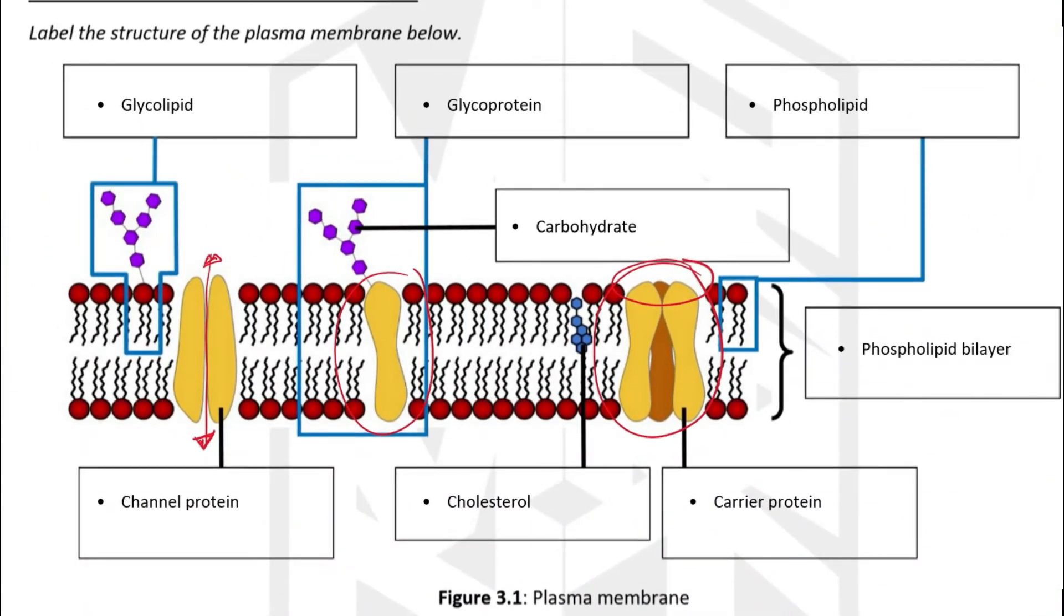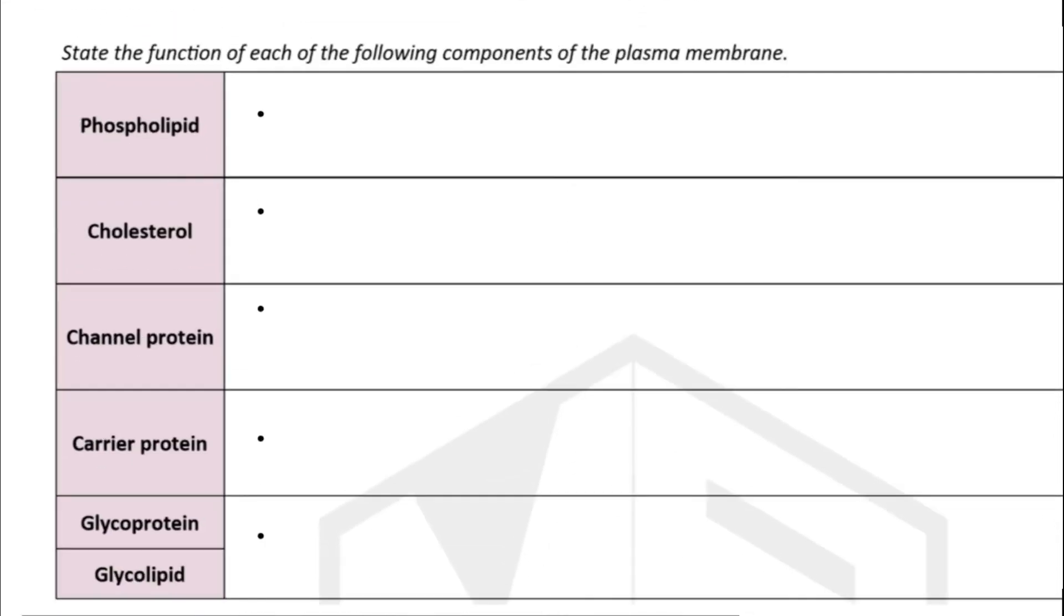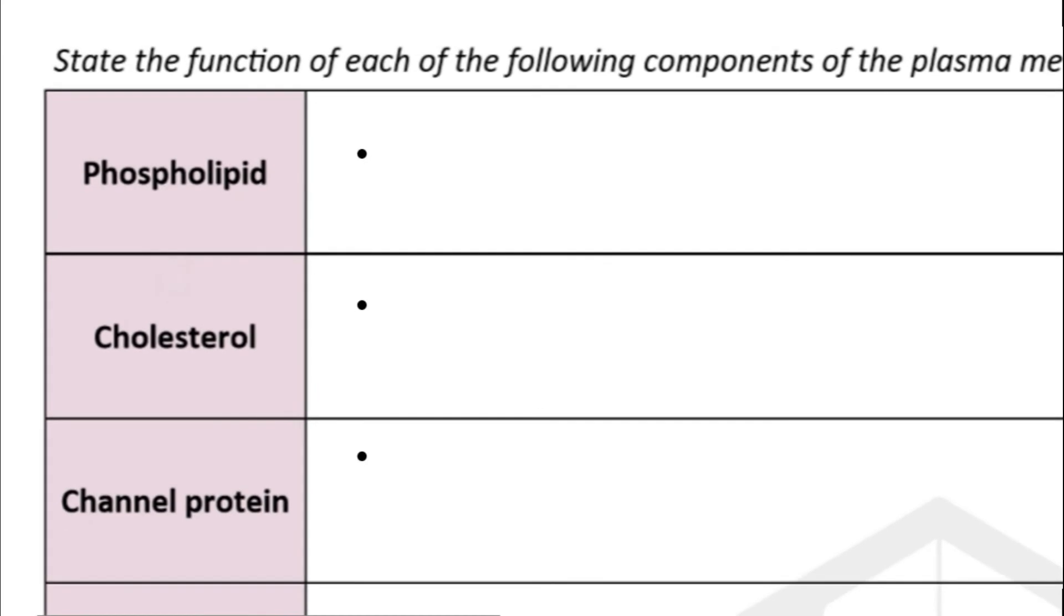Now let's go on to discuss the function of each component in the plasma membrane. First, let's start with the most abundant component, the phospholipid.